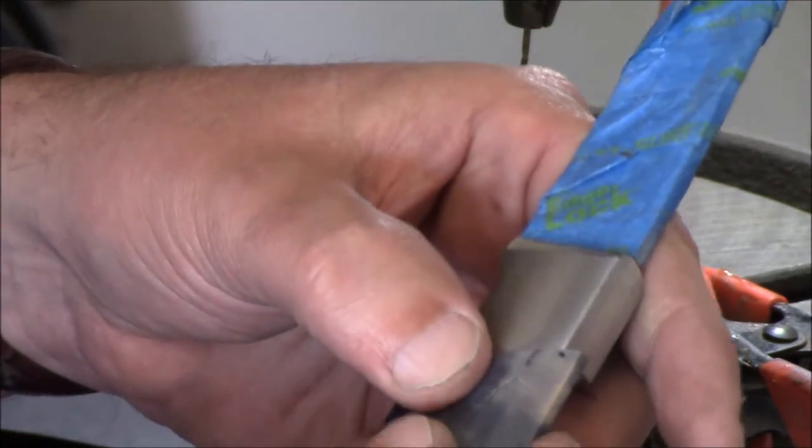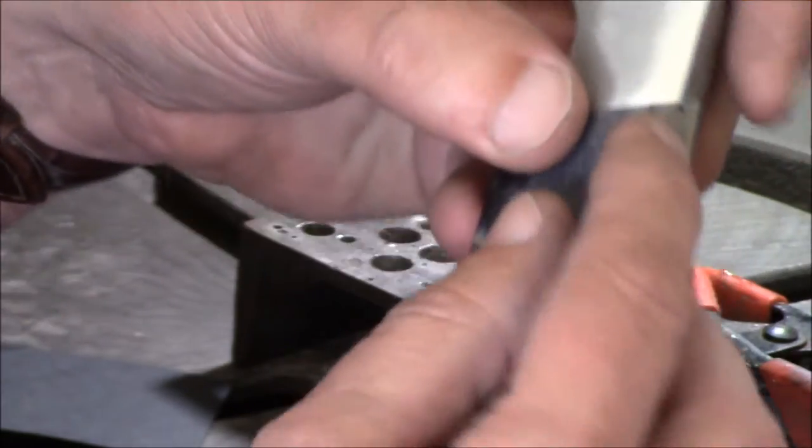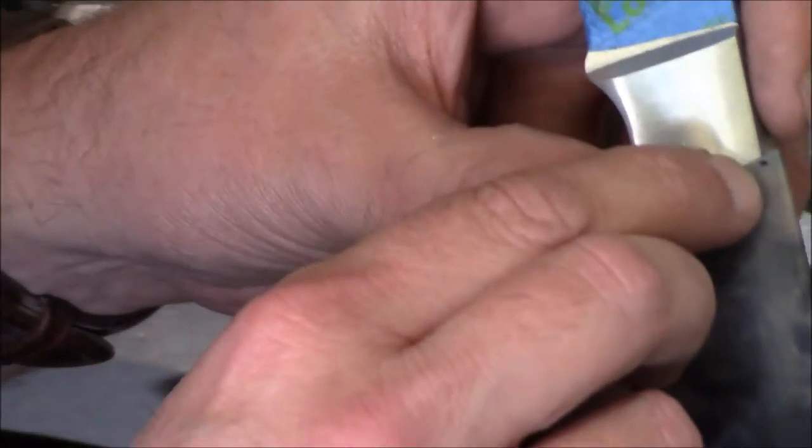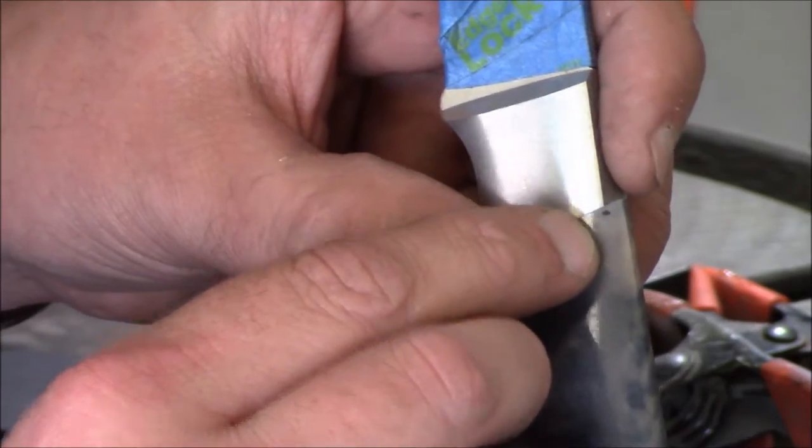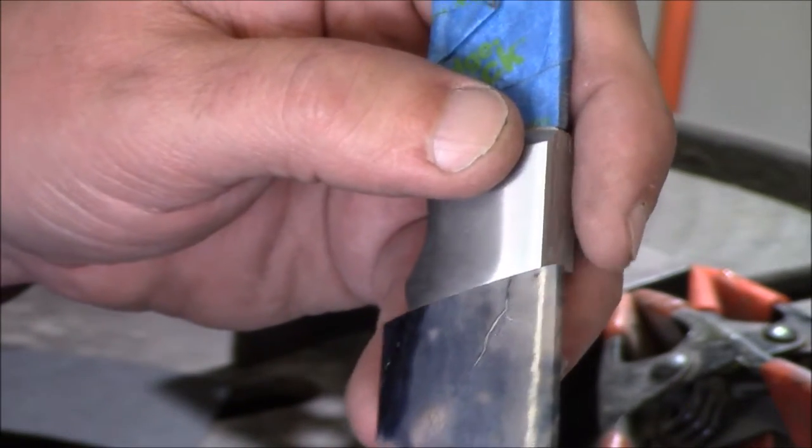What I did is I went in and put a little bitty dot—it's really hard to see—but there's just a little black dot right there to line up where I want the ivory to be. I don't want it too far down or too far up.